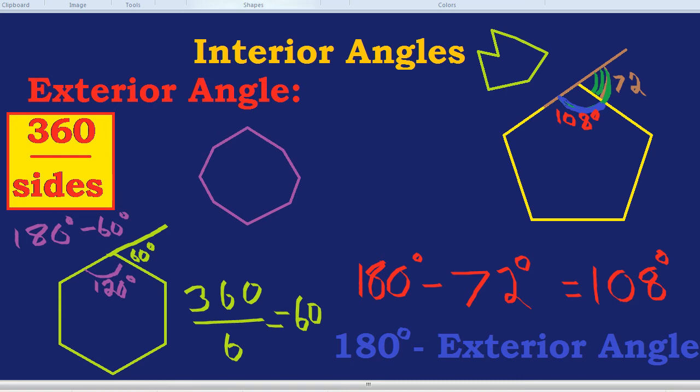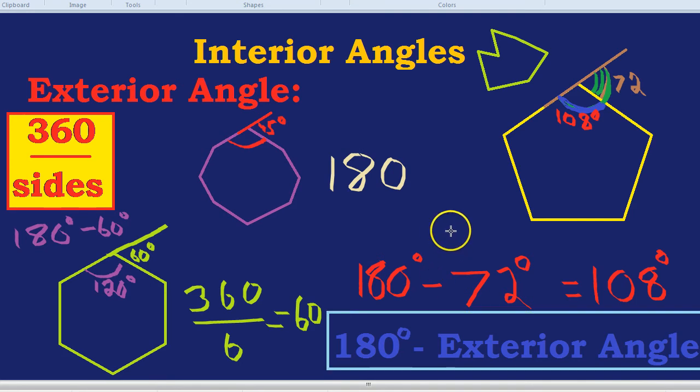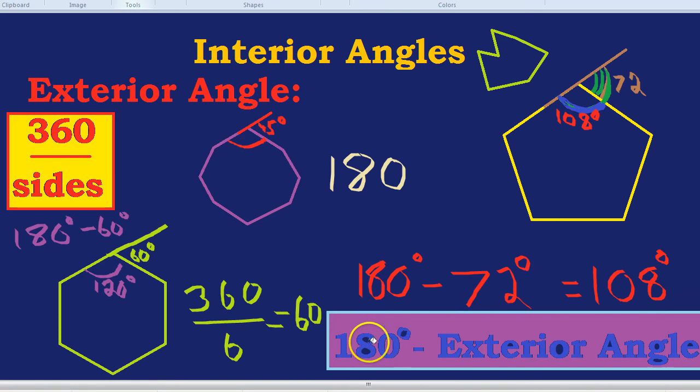What that means is the exterior angle of a regular octagon would be 45 degrees. How would we get the interior angle? The interior angle. We would do 180 minus the exterior angle, as always, highlighted by our formula down here. 180 degrees minus the exterior angle. And that will give us, in the case of an octagon, we have 180 degrees take away 45, which I believe would be 135.